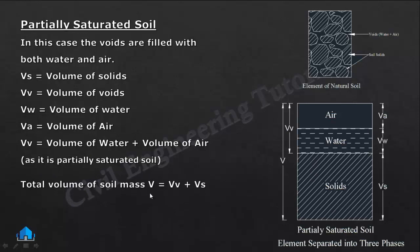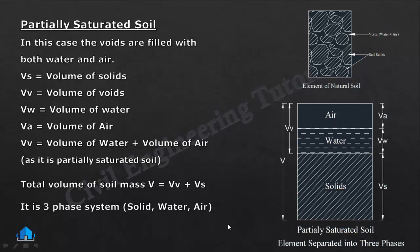Total volume of soil mass is Vv plus Vs — volume of voids plus volume of solids. Va plus Vw is volume of void, and volume of void plus volume of solid is total volume V. So this is a three-phase system: solid, water, and air. This is the phase diagram of partially saturated soil.